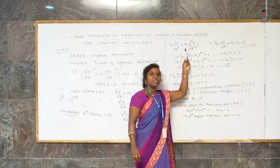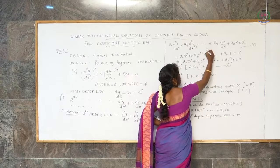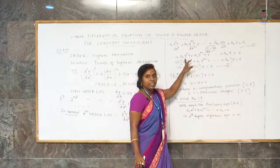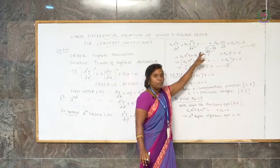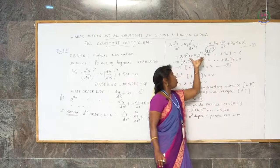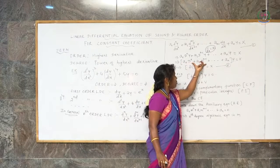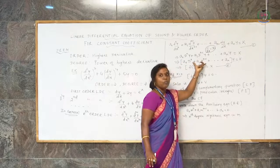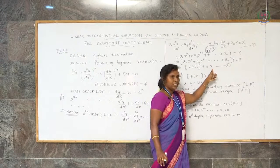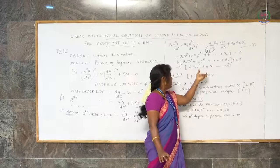Here d/dx represents the differential operator. For simplification, we take d/dx equal to capital D. Therefore, this equation can be rewritten as a₀Dⁿy plus a₁D^(n-1)y plus ... plus aₙy equals X. Since y is common to all terms, we factor it out, giving a polynomial in D. This is written as f(D)·y equals X, where X stands for functions of x and f(D) stands for a polynomial in D.